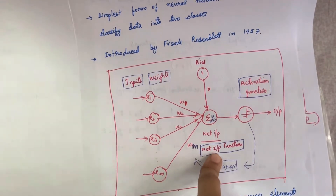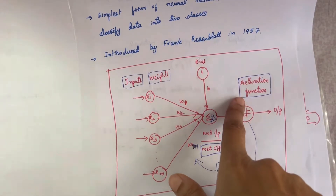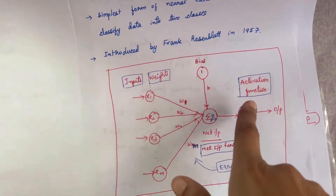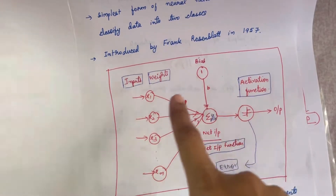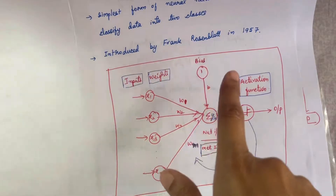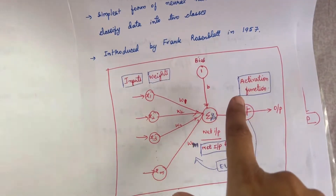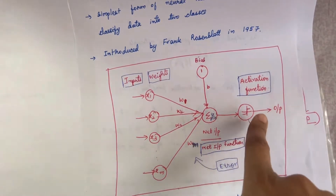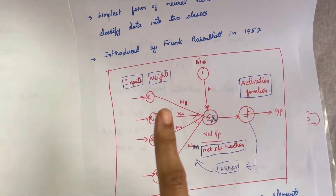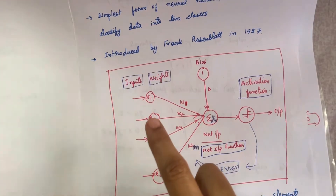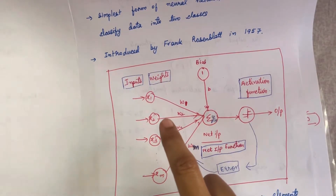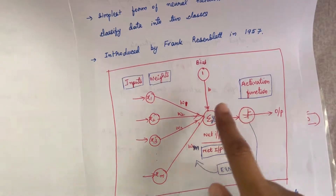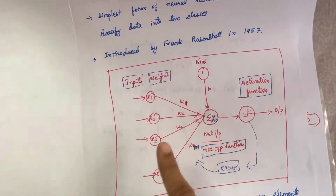After calculating the net input function, you have to apply your activation function. The activation function will help you determine whether the neuron is going to fire or not. There are many activation functions available, but in this perceptron neural network, Frank Rosenblatt used the step activation function. After applying this activation function you will get the output, and this output value is compared with the target value.